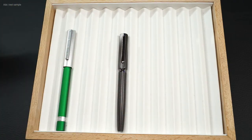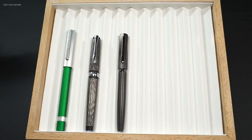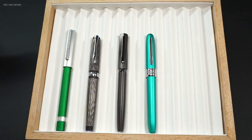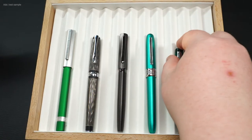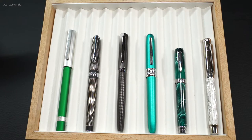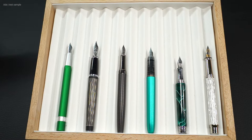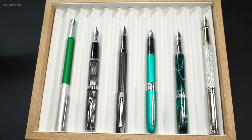In the second comparison, here it is with the Staedtler TRX, a Diplomat Excellence Wave, a Platinum Plaisir, an Online Bohemian Art, and an Otto Hutt Design 04. It is also within the range of the others, with the exception of the midi-sized Online Bohemian Art, of course.